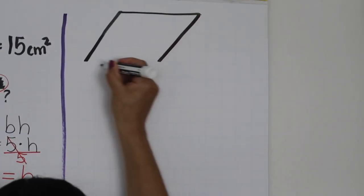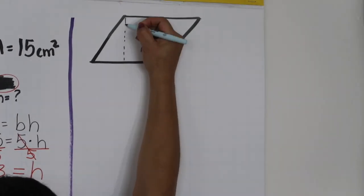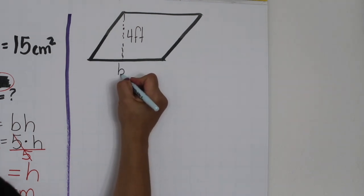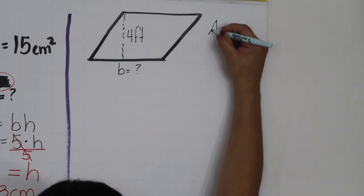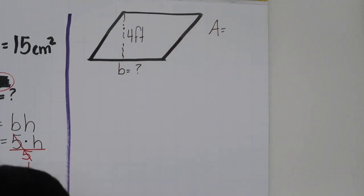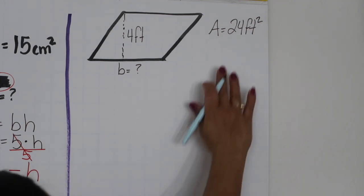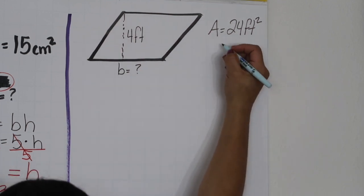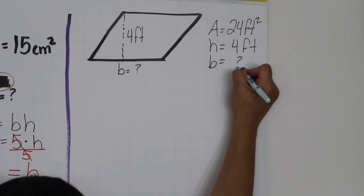Here we have a parallelogram, and the height of this parallelogram is 4 feet. The base we don't have — we're going to look for the base. What's given is the area, which is 24 square feet. We know the height is 4 feet, but we don't have the base; we're looking for the base.